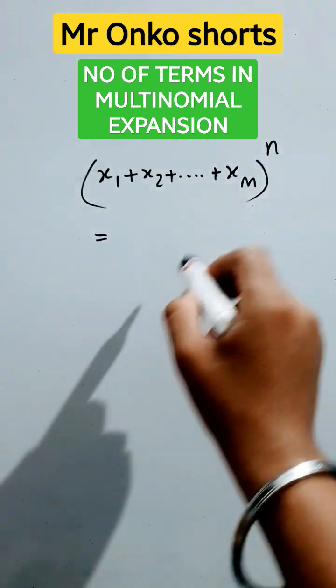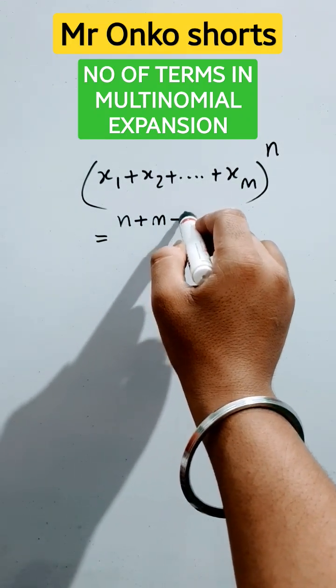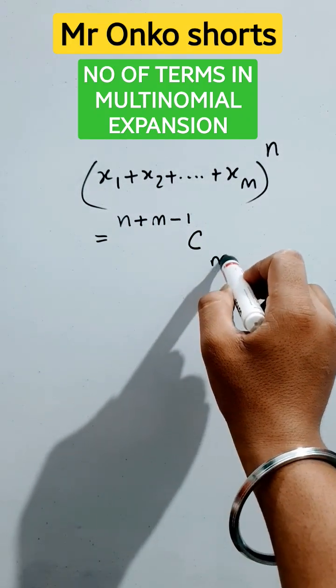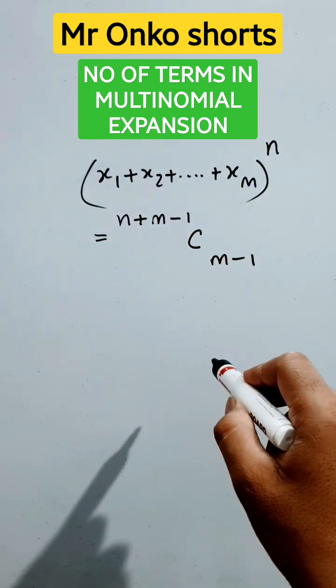So, the shortest trick and the formula is that is n plus m minus 1 combination of m minus 1. This is the number of terms of this type of expansions.